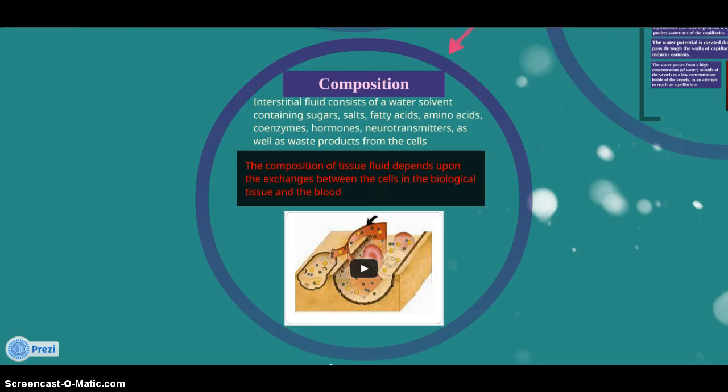Interstitial fluid consists of a water solvent containing sugar, salt, fatty acids, amino acids, coenzymes, hormones, neurotransmitters, as well as waste products from the cells. The composition of tissue fluid depends upon the exchange between the cells and the biological tissue of the blood.